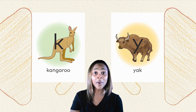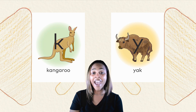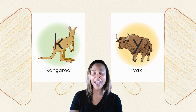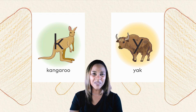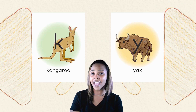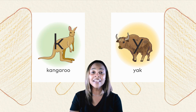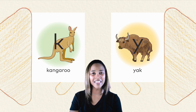We are going to use the word kangaroo to help us remember the kk sound for the letter K, and we are going to use the yak to help us remember the yuh sound for the letter Y. Let's practice our letter chant for K and Y. Repeat after me. Ready? K-kk-kangaroo. Y-yuh-yak. Nice work with the letter sound chant.